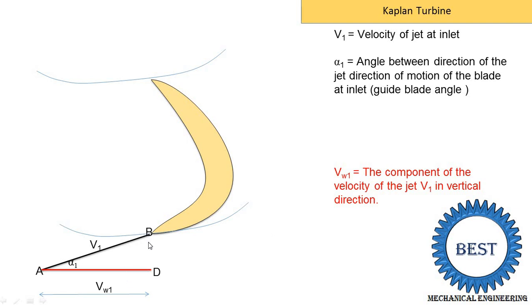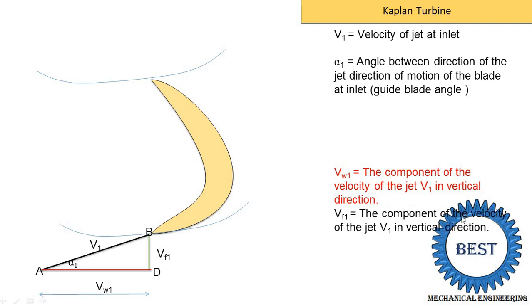The vertical part — we join points B and D — is indicated as Vf1, where V means velocity and f means flow. The subscript 1 indicates the inlet. So Vf1 is the component of velocity V1 in the vertical direction. Next, on this triangle, we indicate two more velocities: the velocity of the blade u1 and the relative velocity. A horizontal line is added indicating u1 — the velocity of the blade at inlet — denoted as line AC. So u1 is the velocity of the blade at inlet.